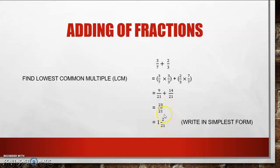And there is my final answer. So the steps are: find the lowest common multiple, add only my numerators, and write in the simplest form.